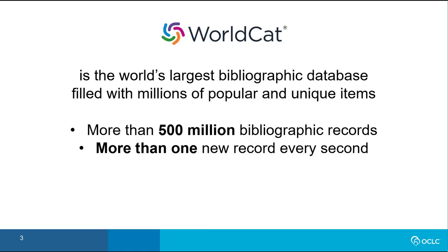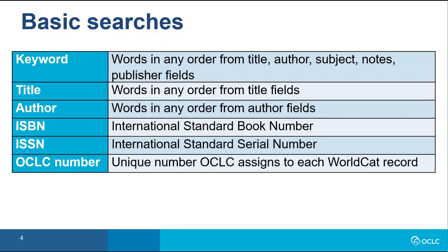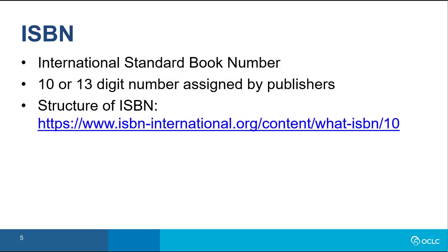WorldCat is the world's most comprehensive database of information about library collections. WorldCat has more than 500 million bibliographic records and more than one new record is added every second, so it's important to search efficiently so you can quickly find the record that matches the item you're cataloging. On the basic search screen, you can search by standard numbers such as ISBN or by keyword, title, or author. To search other indexes, use the advanced search screen. If available, try an ISBN search first.